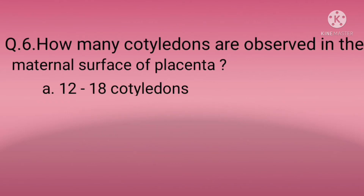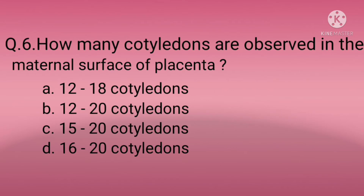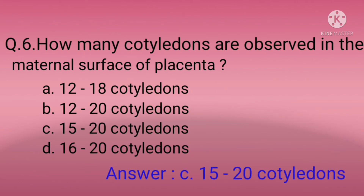Question six: How many cotyledons are observed in the maternal surface of placenta? Option A: 12 to 18, Option B: 12 to 20, Option C: 15 to 20, Option D: 16 to 20. The correct option is C — 15 to 20 cotyledons are present in the maternal surface of the placenta.